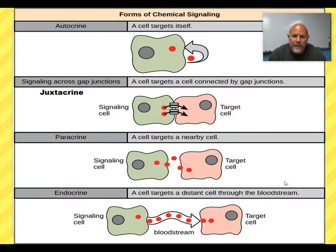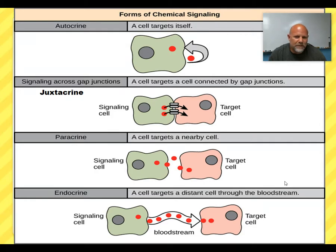It's called autocrine when you send a message to yourself. Basically, you're releasing a hormone that leaves the cell but then binds to a receptor on the surface of that same cell and sends a message to itself. It seems kind of silly, but this does happen. Sometimes cells communicate with themselves and other nearby cells at the same time with the same signal.